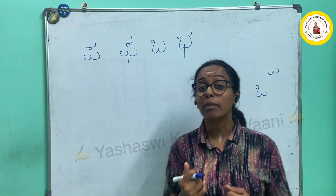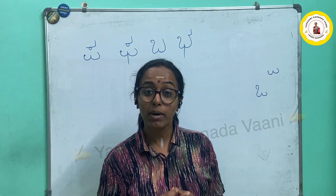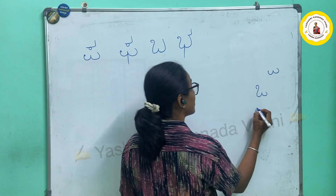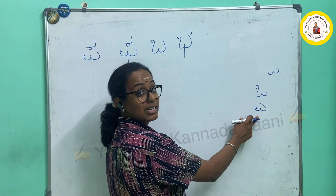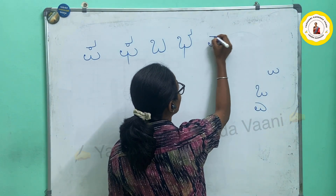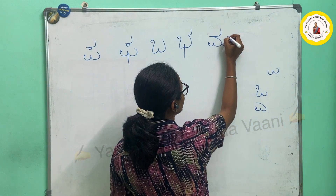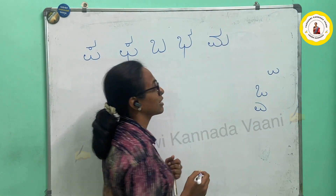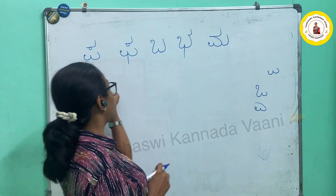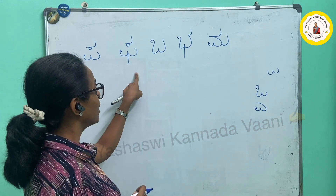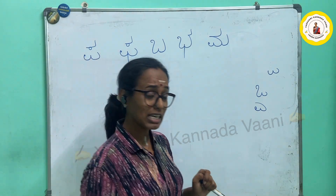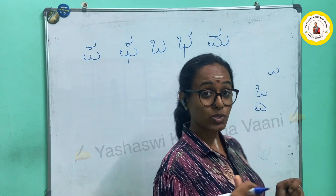The next one is letter M — monkey. How do I write? Remember the letter A? Write this one — letter A — and to here just give a curve like this. That is letter M.